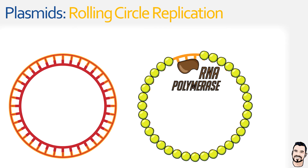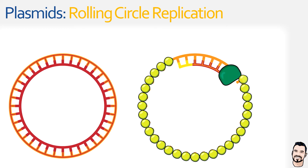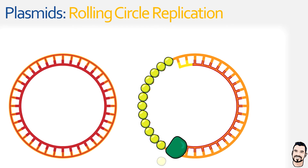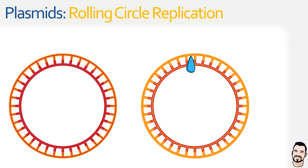For the second plasmid, the shape of the plasmid twists, shaking off some of the single-stranded binding proteins. This exposes part of the single-stranded parental DNA, which host RNA polymerase uses to produce an RNA primer. Once produced, the primer is used by DNA polymerase III to produce another daughter strand of DNA using the parental strand as a template. Once complete, DNA ligase joins the ends together, resulting in two plasmids — each containing a parental strand and a newly synthesized daughter strand of DNA.